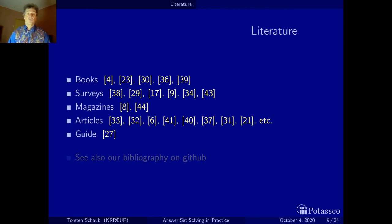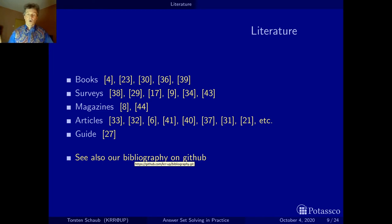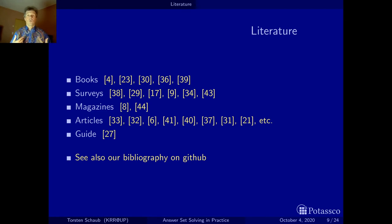The course literature is compiled in a LaTeX document where all pointers can be looked up. There are books, surveys, magazines, and articles, covering a lot of the literature. These entries are taken from our bibliography, which is also on GitHub. It's open — you can access it, and if you want to correct it, just launch a pull request to add entries or fix things. You can just download it — it's open and free.